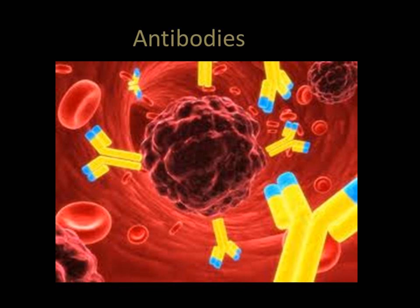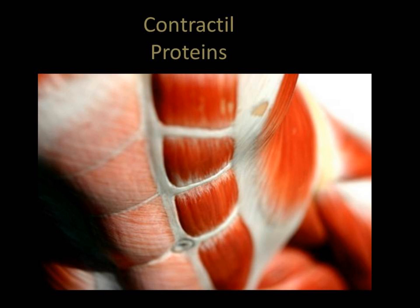Let's start with antibodies. Antibodies are specialized proteins involved in defending the body from antigens. One way antibodies destroy antigens is by immobilizing them so that they can be destroyed by white blood cells.